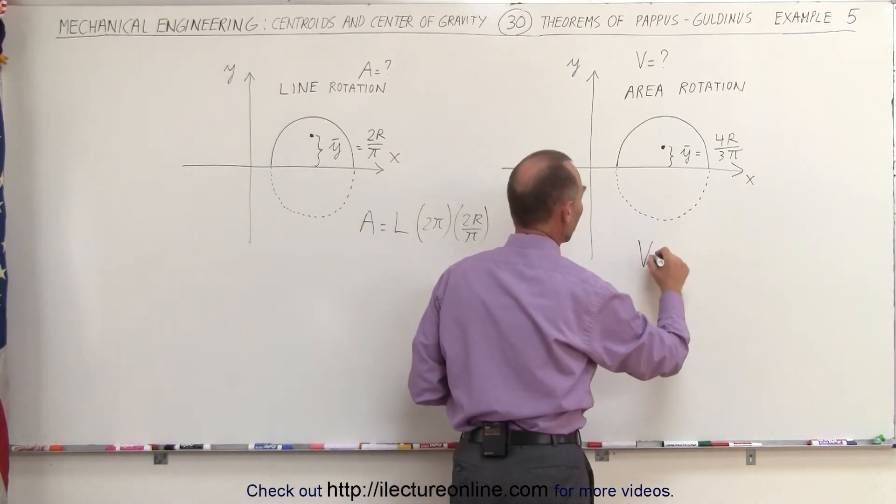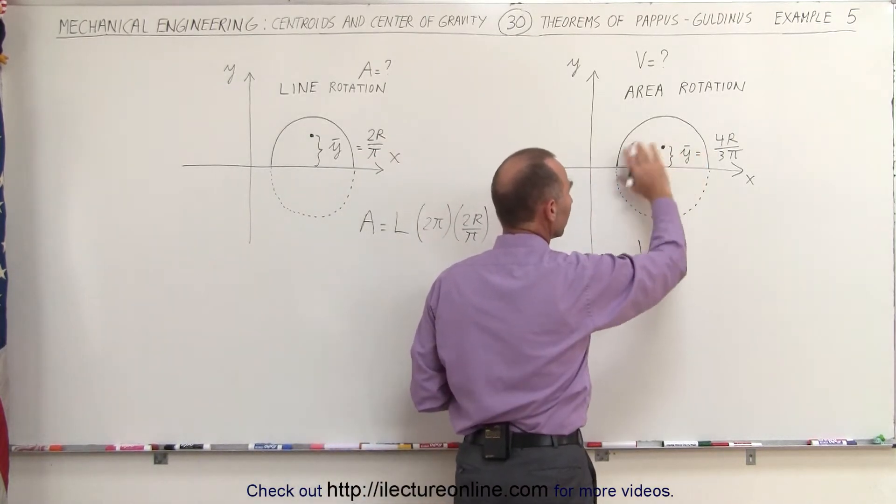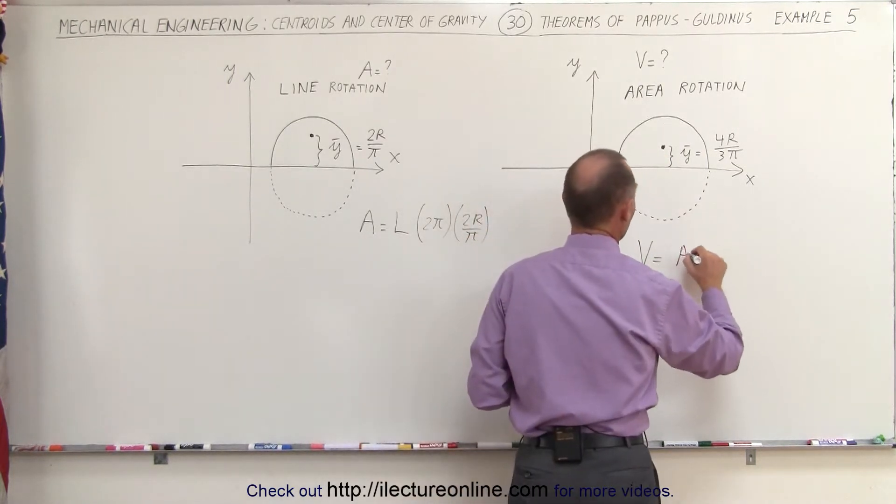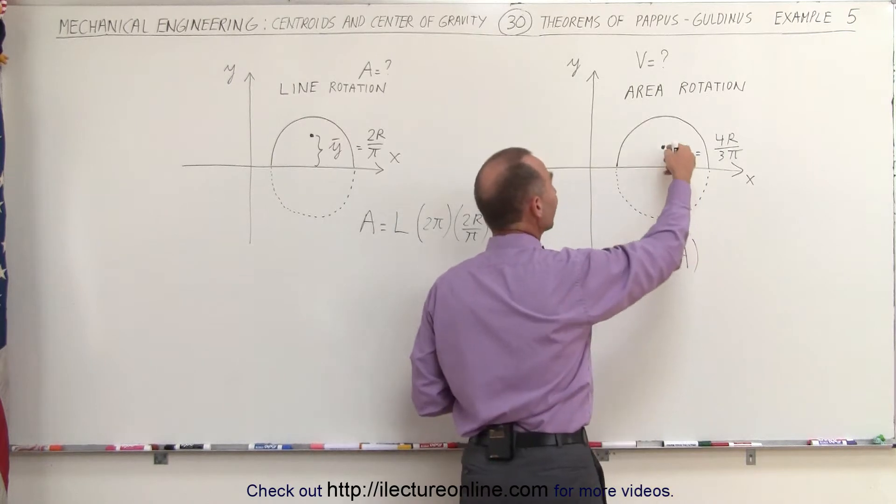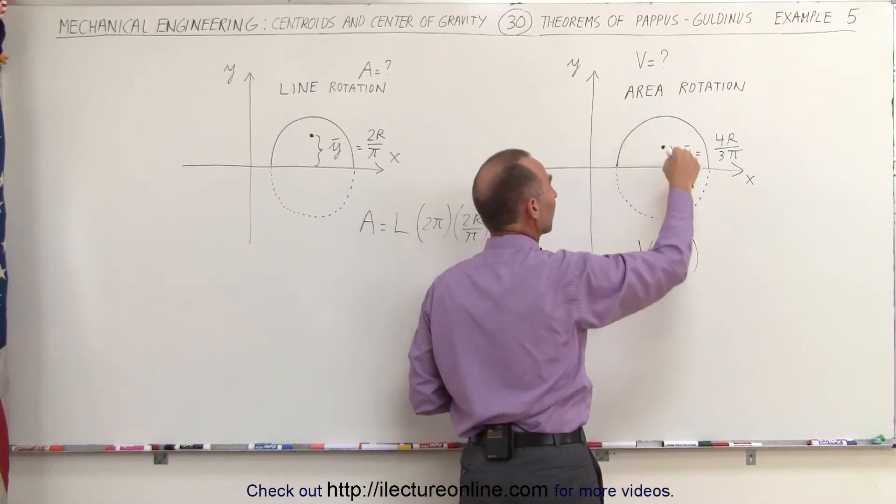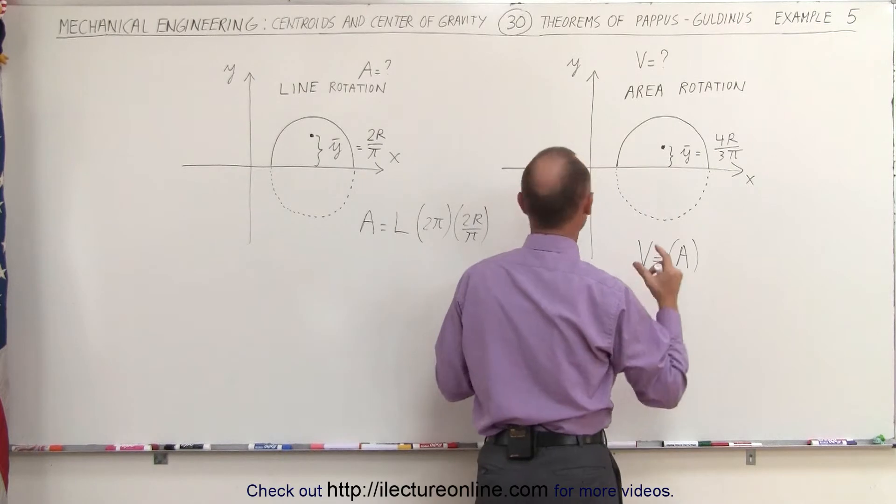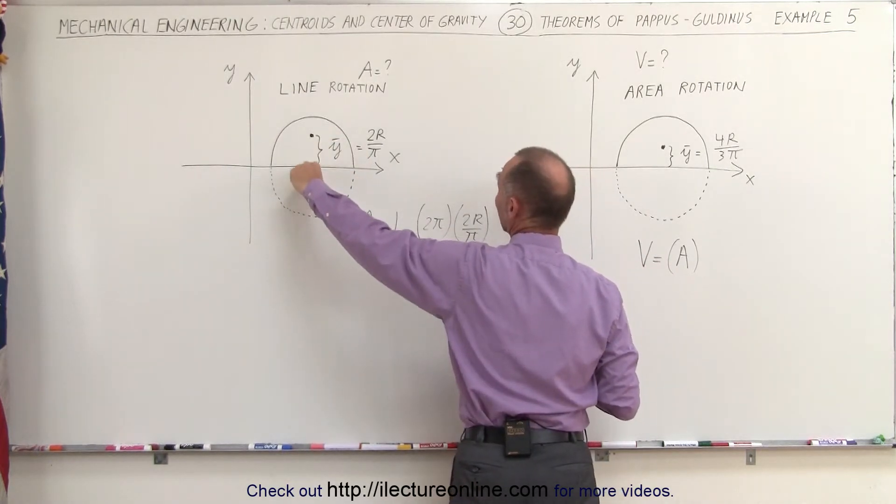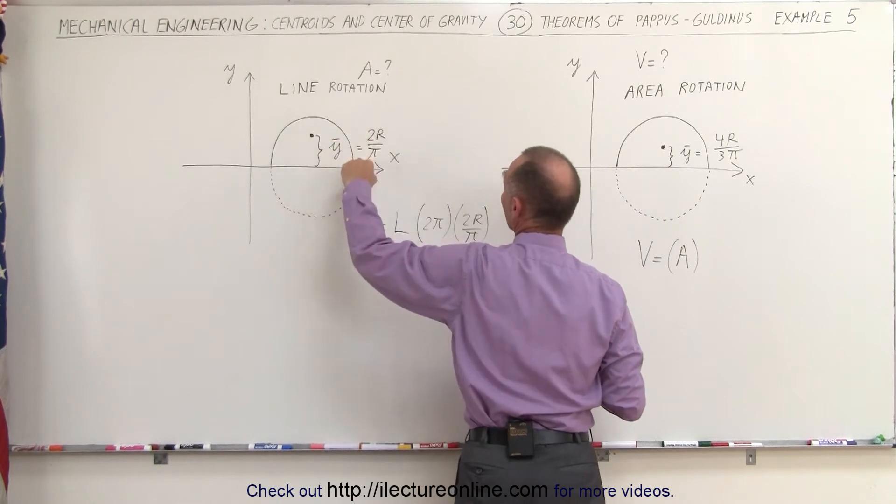In this case, to find the volume, we take the area, the surface area of that semi-circle, and multiply it times the distance the center of mass of the area travels as you rotate the area around the x-axis. The only difference is, in this case, the distance from the axis to the center of mass is 2r divided by π.